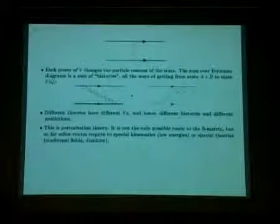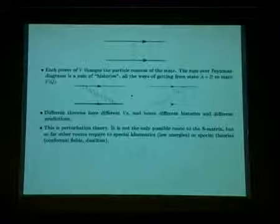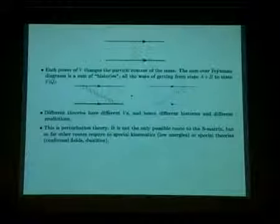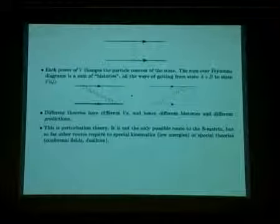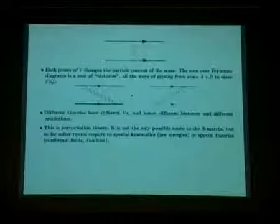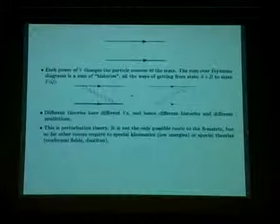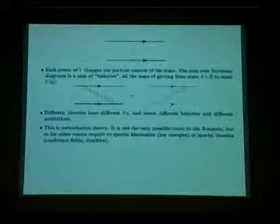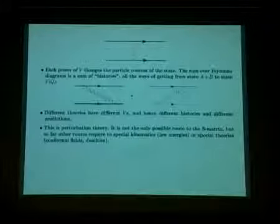Here we have a single Feynman diagram. A plus B is over here on the left, and F also equals A plus B on the right. What's happened is there's an exchange of momentum by the exchange of a photon. Each power of V changes the particle content of the state. The sum over Feynman diagrams is the sum of histories, all the ways of getting from state A plus B to state F. On the left, the particle on top emits a photon, taking the system from a two-particle state to a three-particle state. The photon is absorbed on the other side, changing the particle content from three particles to two.